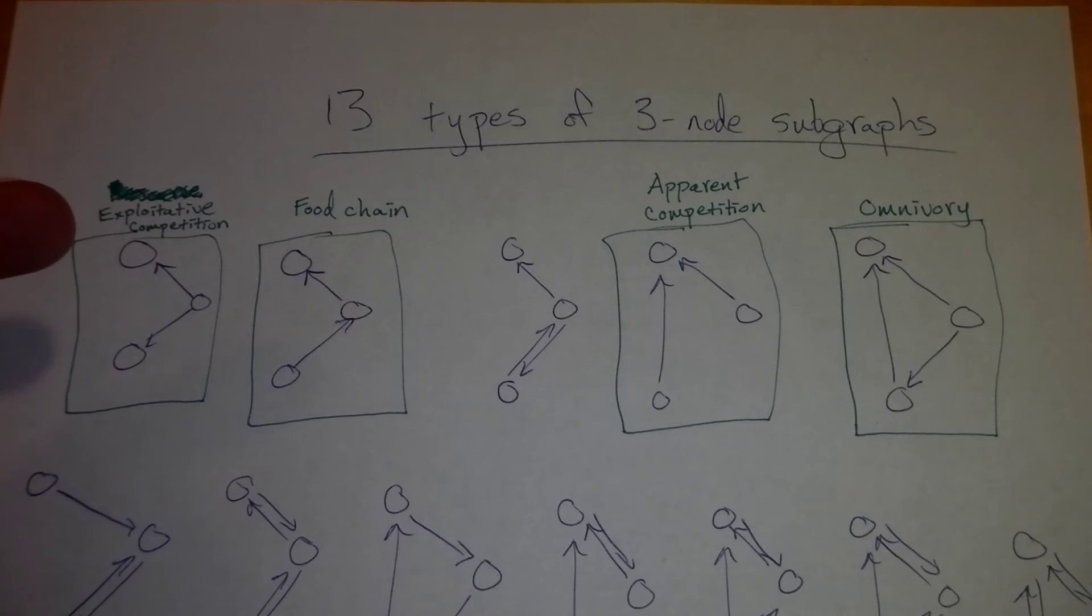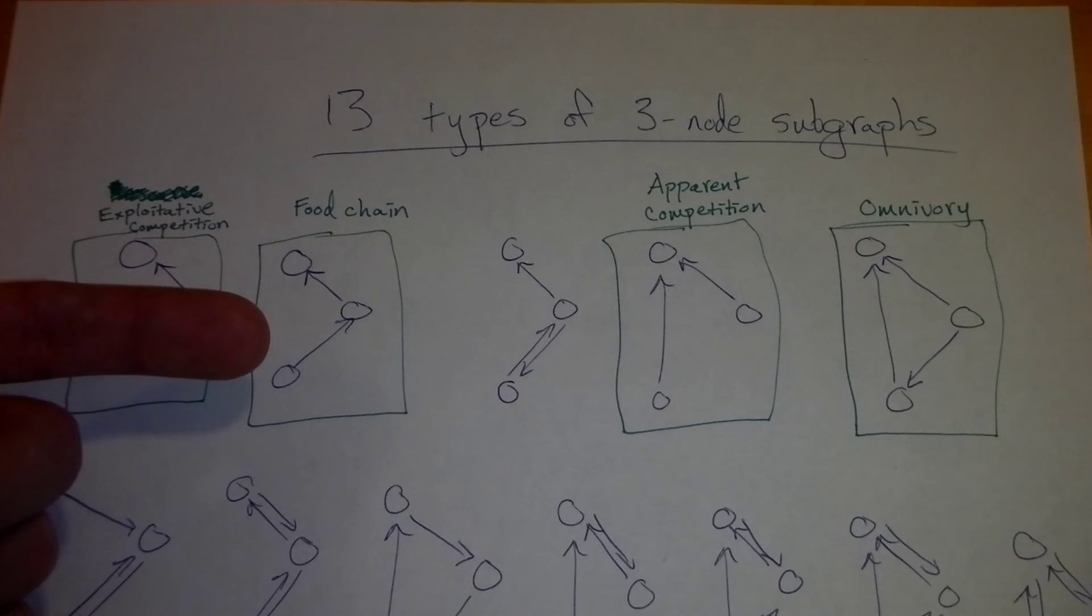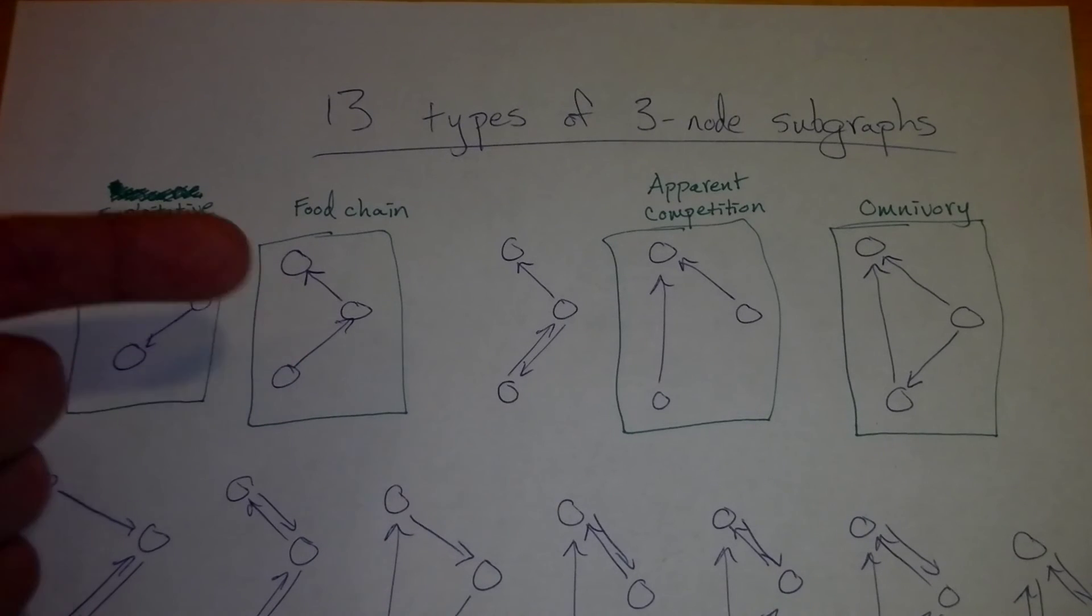One of those is exploitative competition. So, example, we have these two species competing over a basal resource, energy flow they're competing over. Right here, we have a food chain. So you can see the arrows are going from resource to a consumer to a predator.